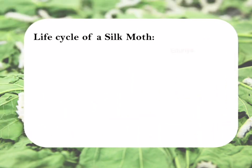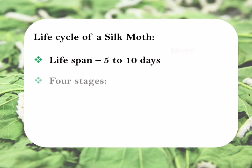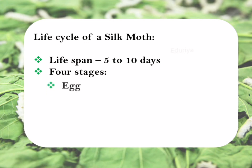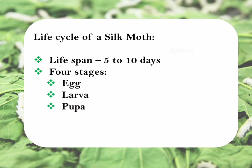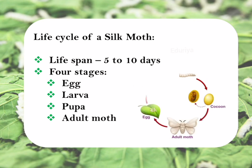Now let's see about the life cycle of a silk moth. The life span of a silkworm is 5 to 10 days. There are four stages involved in the life cycle of a silk moth: egg, larva, pupa, and adult moth. Let's see one by one in detail.